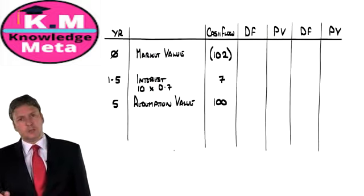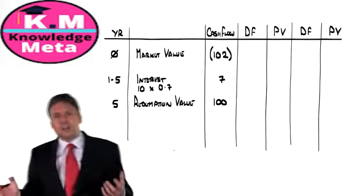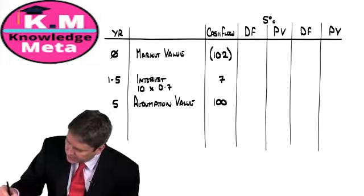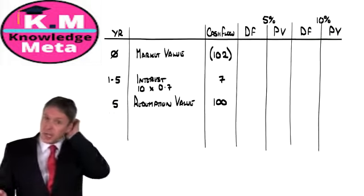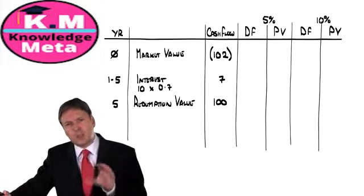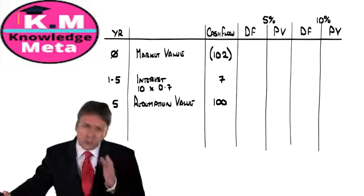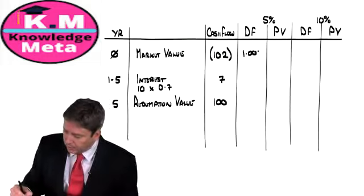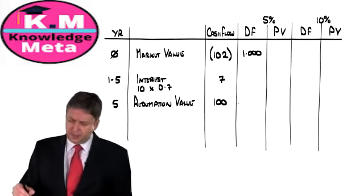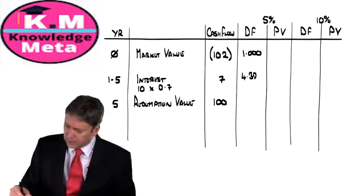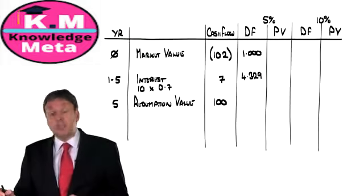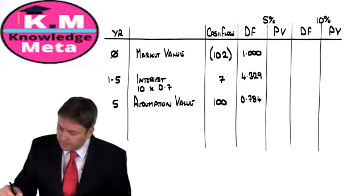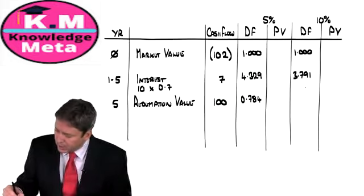We have our cash flows, and after that it's pure routine. We already know how to use the tables. We want the discount factors, discounting at 5% and at 10%, because we'd generally expect the cost of debt to be somewhere in that range. At 5%: year zero is 1, five years at 5% gives an annuity factor of 4.329, and year five at 5% gives 0.784. At 10%: annuity factor of 3.791 and 0.621.